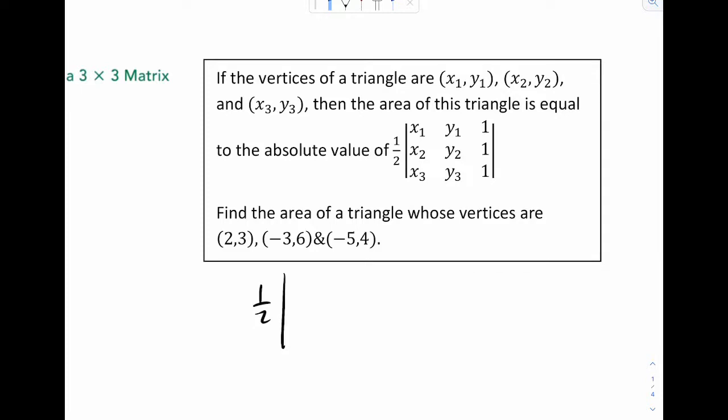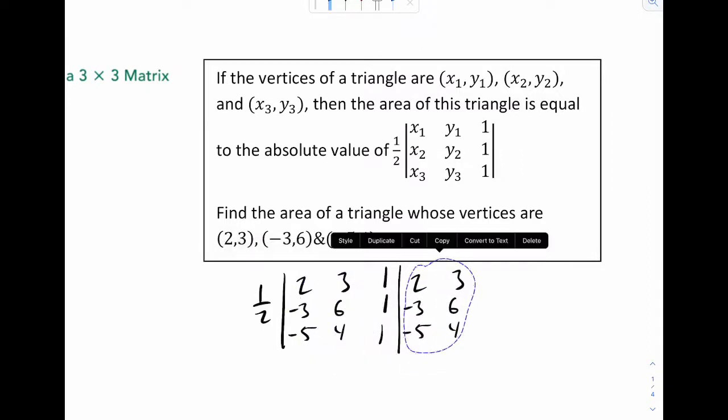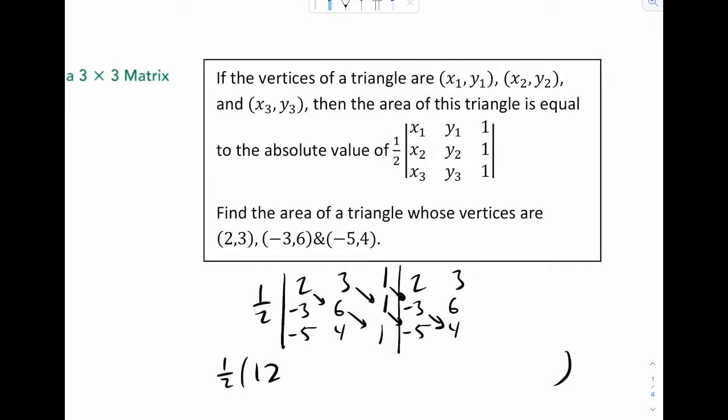One half - the order doesn't really matter, so just plug it in. 2, 3, 1, negative 3, 6, 1, negative 5, 4, 1. Let's duplicate that. Okay, so one half, and we're gonna figure this big thing out. So that's going to be 12 minus 15 minus 12, and I'll go up - that's going to be plus 30 minus 8, and then plus 9.